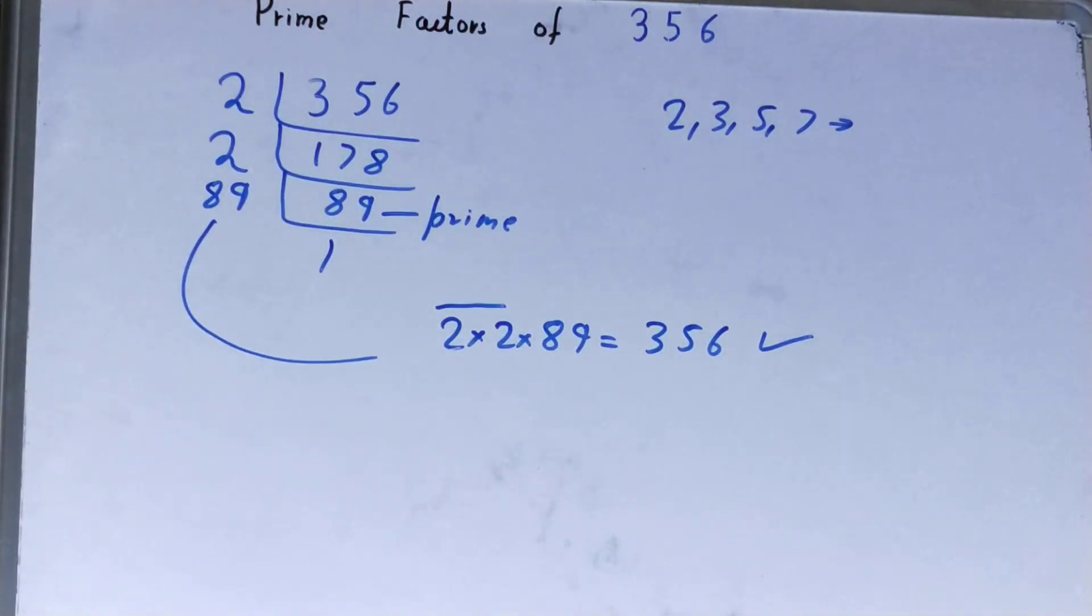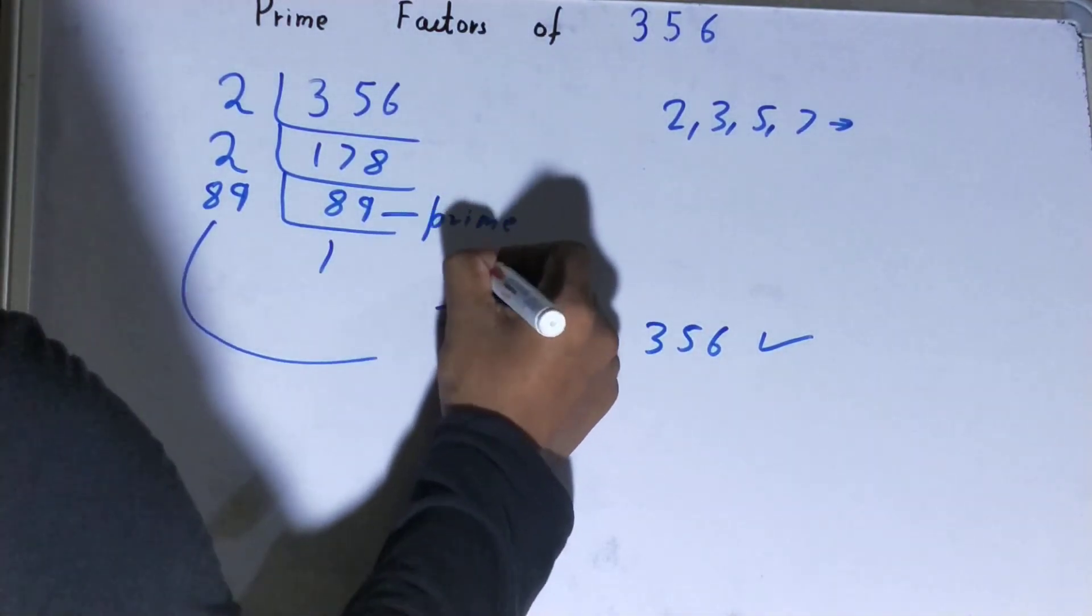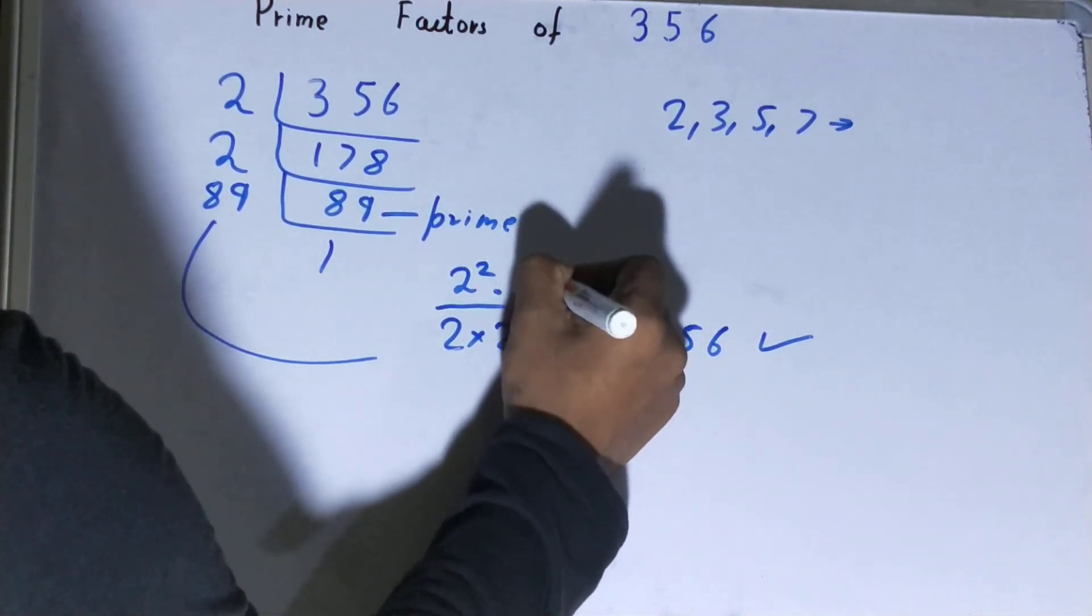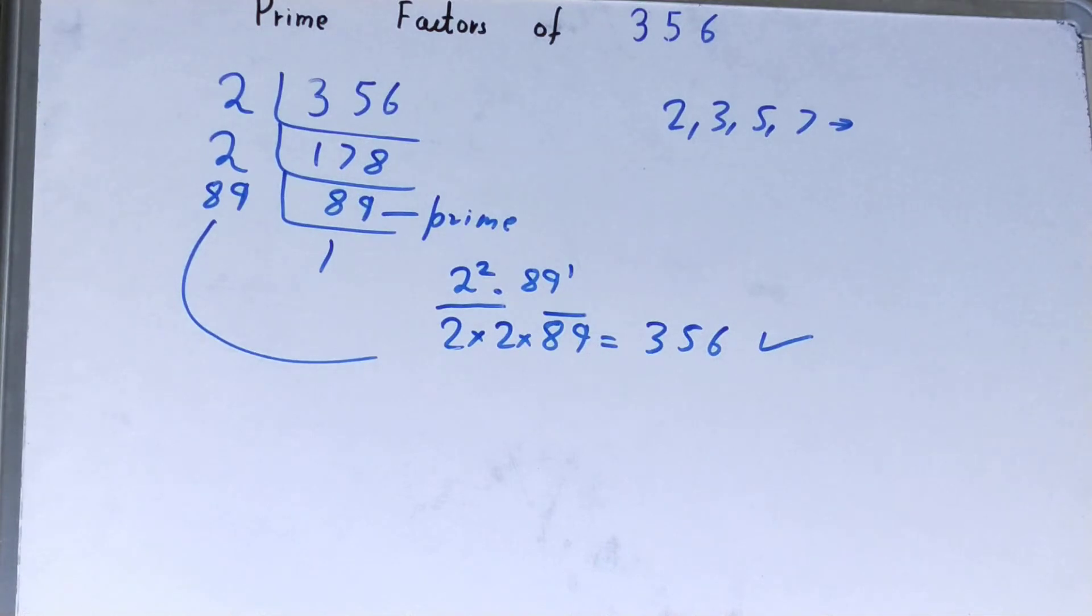You can also write it in a different way. You have 2 times 2, so you can write it as 2 squared, and you have one time 89, so you can write it as 89 raised to power 1. You can write it this way or that way, it's up to you.